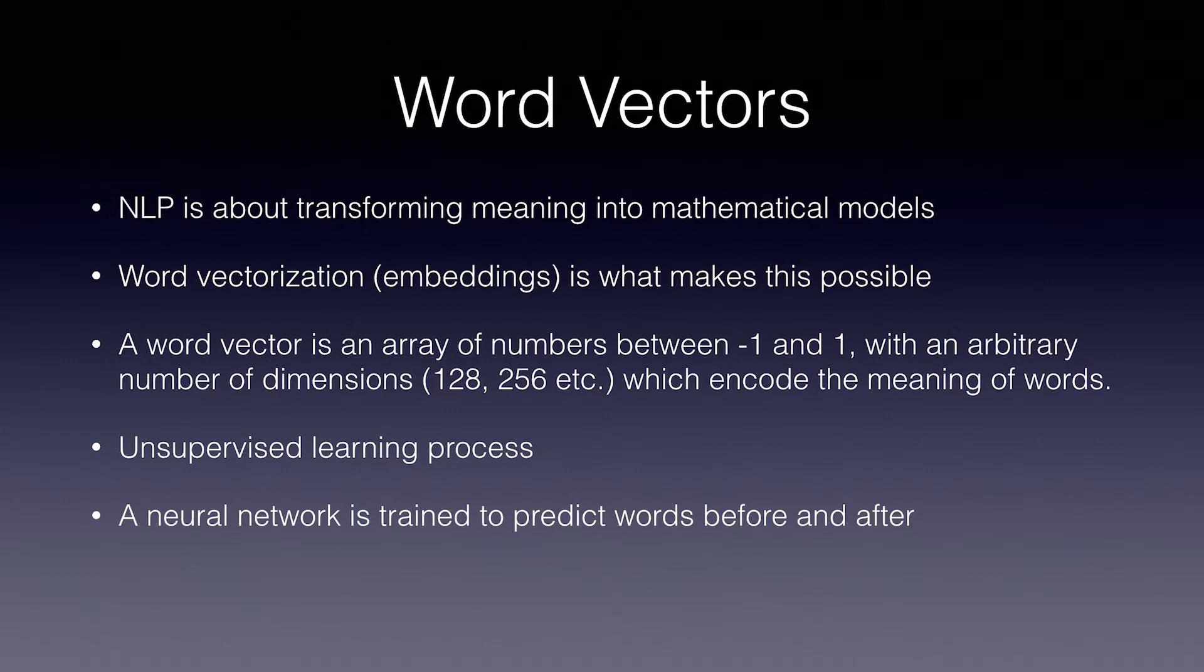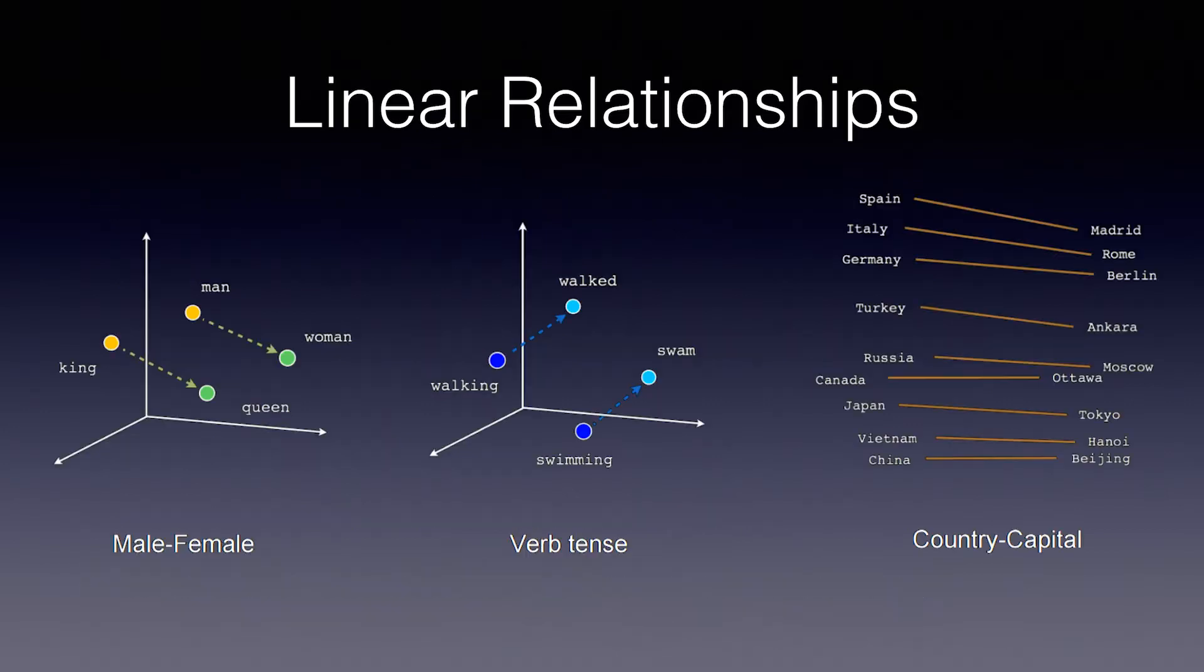You can train these yourself or download very high-quality pre-trained models. And when you examine the vectors, you'll find abundant mathematical patterns between similar words. For example, if you subtract king minus queen, this will be nearly equal to man minus woman. And walking minus walked will be very similar to swimming minus swam. There's even very clear relationships between countries and capitals. So when you plug words into an NLP model, you generally plug their trained vectors in as inputs, which speeds up the learning process quite a bit.